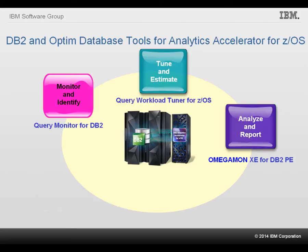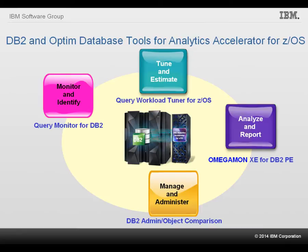Beyond monitoring and analysis capabilities for DB2 for ZOS and applications, the DB2 Tivoli OmegaMon XE for DB2 Performance Expert on ZOS tool can be used to generate extensive performance reports. These reports offer insight to the behavior of accelerated queries and appliance utilization, which helps validate the return on investment for acceleration and identify performance trends. DB2 Object Comparison Tool for ZOS, an extension to the DB2 Administration tool for ZOS version 11.1, provides comprehensive accelerator management capabilities, including adding and removing accelerators, and an option to reload data through change management.